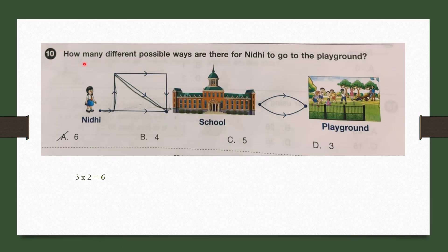Question number 10: How many different possible ways are there for Nidhi to go to the playground? She has three ways to go here and two ways to go there. It is a combination of three ways and two ways. So three times two equals six. She has six possible ways to go. Our answer is option A, which is 6.